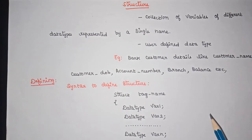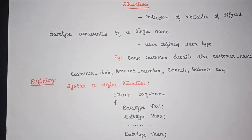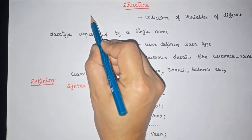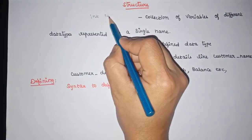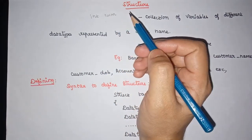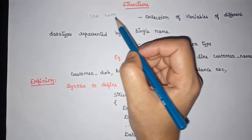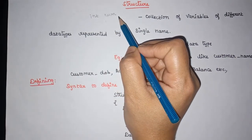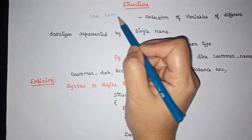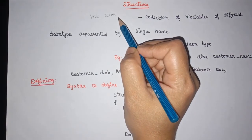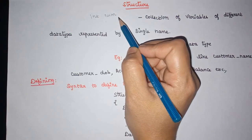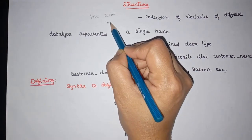Before getting into what a structure is, we should first know when and why we use this concept. When we want to store a single data item, we can make use of primitive data variables like int, float, or character type. If there is a need to store a collection of data items, we can go for an array.